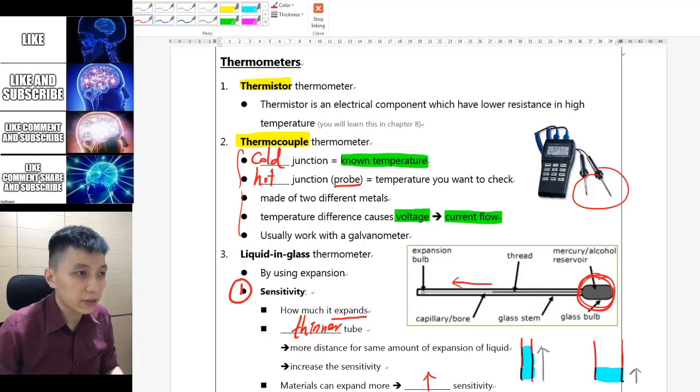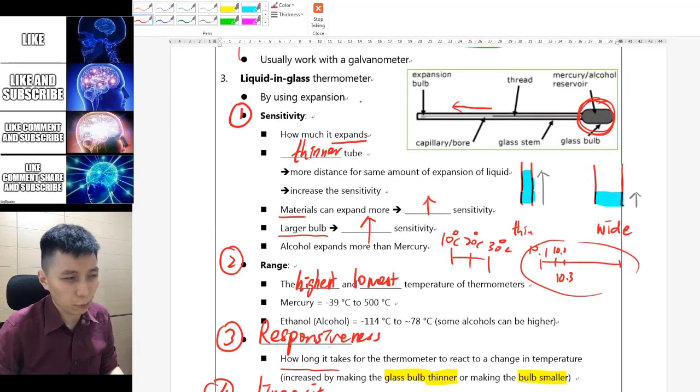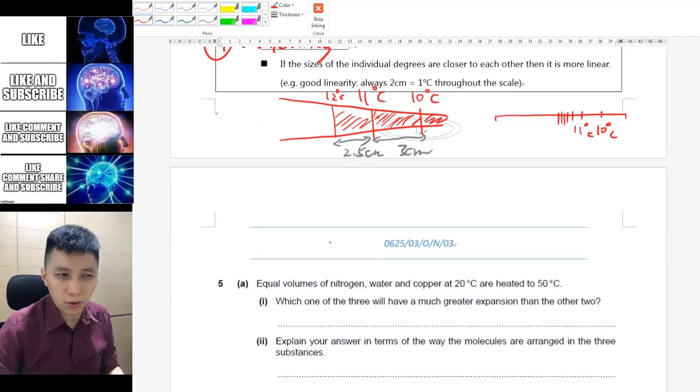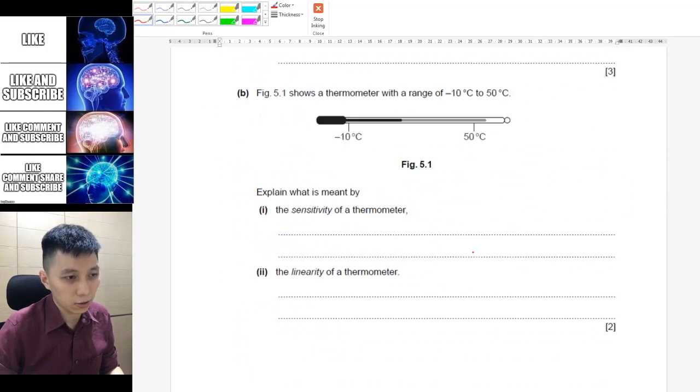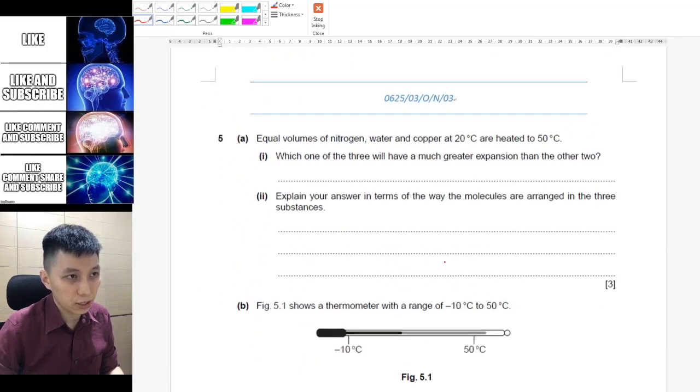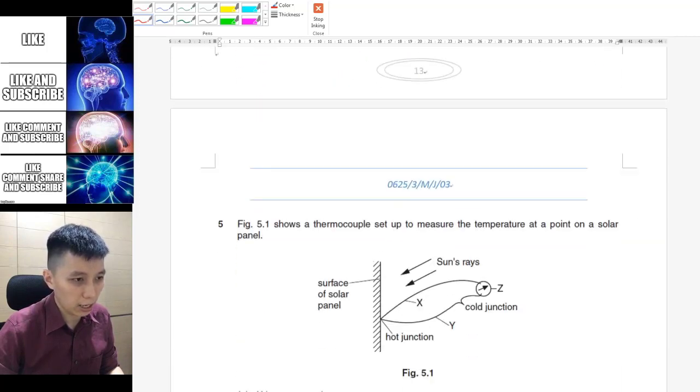Okay, so in the previous video we talked about thermistors, thermocouples, and also liquid-in-glass thermometers. When you talk about liquid-in-glass thermometers, they have four different properties you can describe. So let's try to do practices on that. Look at your note page 13, here is a past paper question.